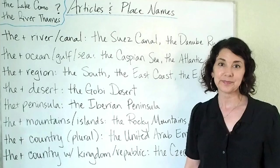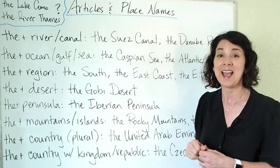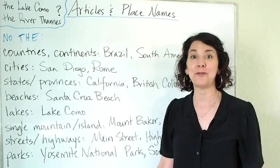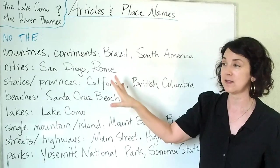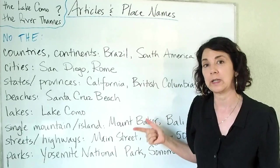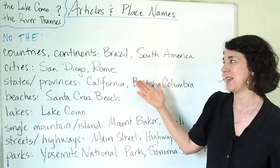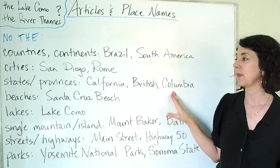Now let's look at examples of when we do not use 'the' before place names. No 'the' with names of countries or continents, such as Brazil or South America — with the exceptions we saw for plural names or names including kingdom or republic. For cities, no 'the': San Diego, Rome. No 'the' for states and provinces, for example California or British Columbia.